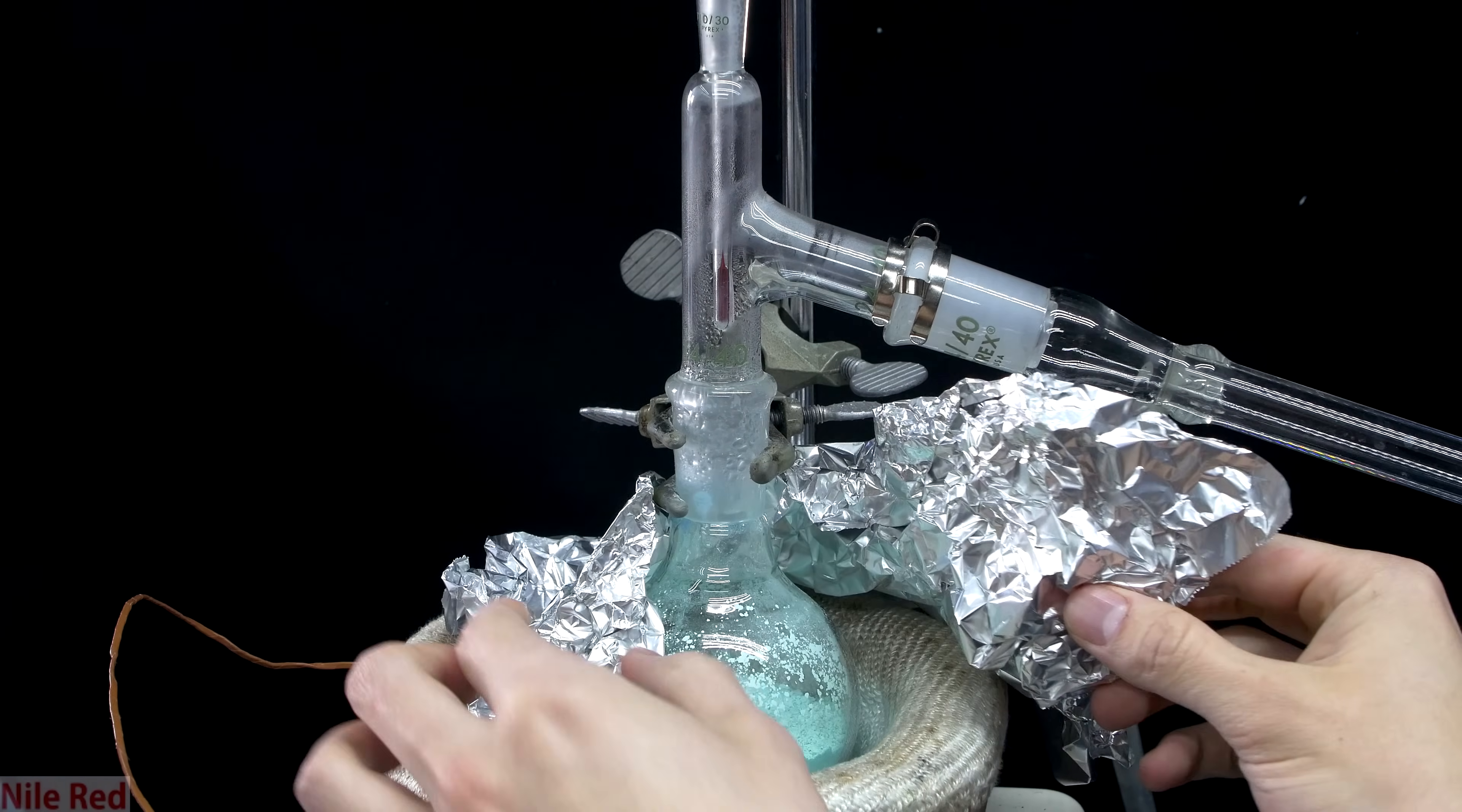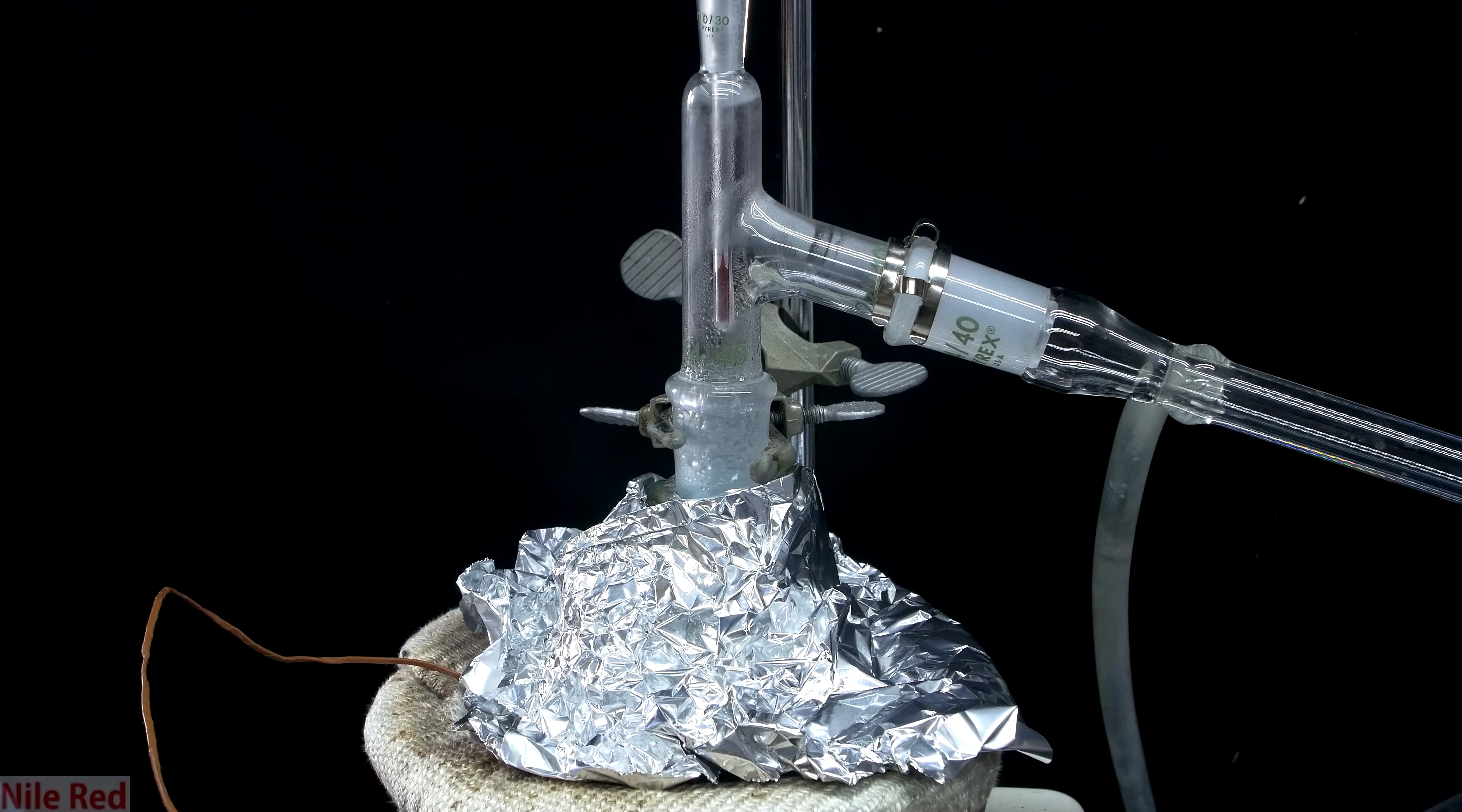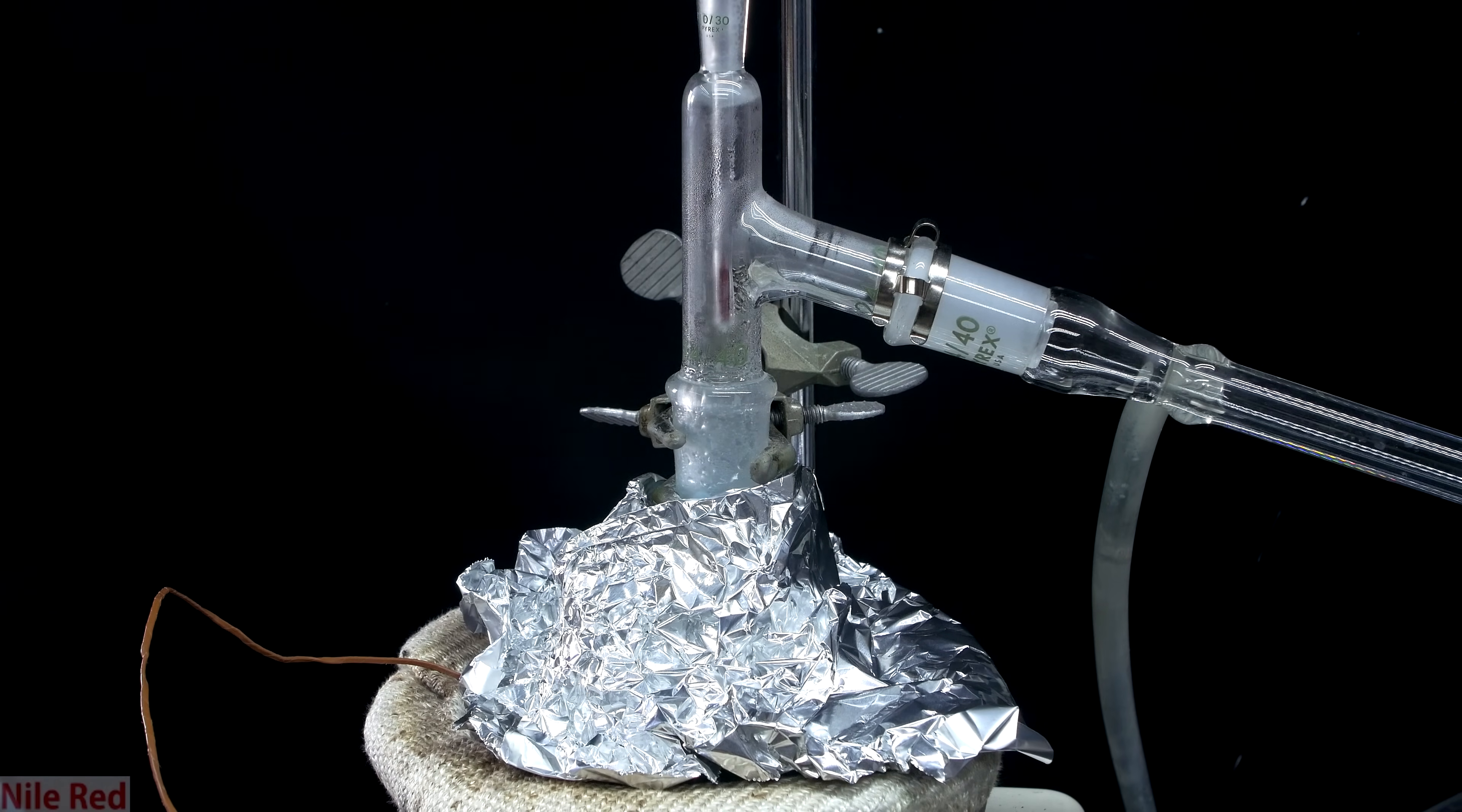So clearly at this point vapors are coming off, but if we move the aluminum foil to the side, we can see that there isn't much happening inside the flask. At this point though, now that vapors are being produced, unless you're working in a fume hood, you're going to start smelling the disgusting smell of pyridine.